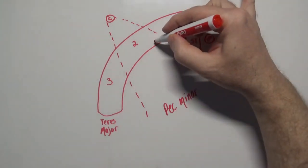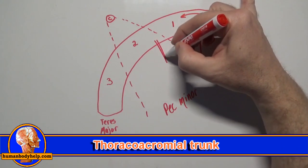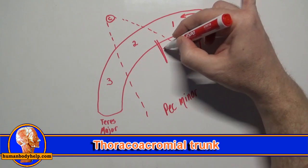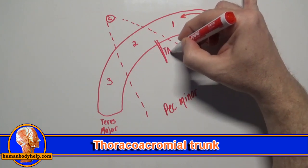The next branch we'll draw will be off the second part of the axillary artery, the thoracoacromial trunk. The thoracoacromial trunk will have 4 branches coming from it.